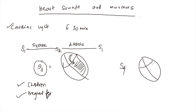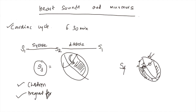S4 occurs when the atria contract forcefully against a hypertrophied ventricle. The atria has to contract excessively because the ventricular wall is hypertrophied, or because the valve is obstructed or stenosed. The atria must put in extra pressure to push the last 30% of blood volume that completes the end-diastolic volume within the ventricles.